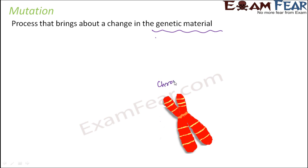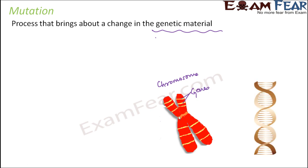Here you can see the structure of a chromosome and on these chromosomes are located the genes — these yellow colored structures. Genes are present in the form of DNA, and each part of DNA will correspond to a particular gene. DNA controls the synthesis of proteins, which in turn displays our characteristics.